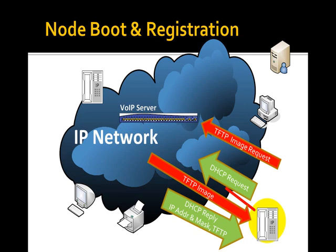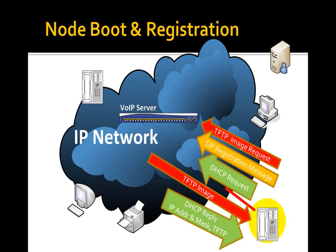That config file contains everything you set up when you created the user account and associated it with that phone. With hardware configuration associated with a specific phone and a unique identity established, the phone sends a registration message to the VoIP server — 'I am user 111 at IP 10.10.10.1' — which stores that in the registrar database. Now calls can be delivered to that phone.